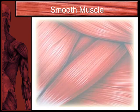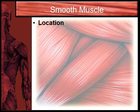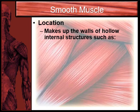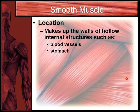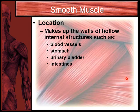Our next category is smooth muscle. Smooth muscle is found in the walls of hollow internal structures. Try to remember from our functions video where you'd find hollow internal structures. These include blood vessels — veins and arteries — your stomach, your urinary bladder, and your intestines, both large and small.